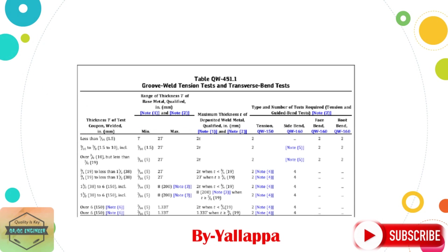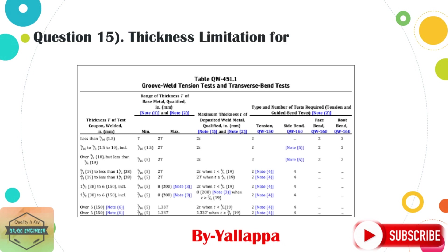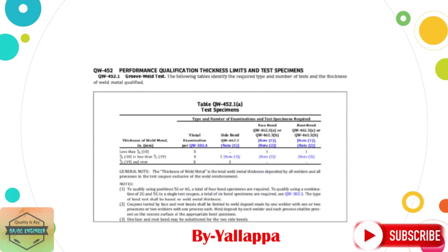Question 15: What is the thickness limitation for procedure qualification? Answer: If a welder deposits weld metal of thickness 13 millimeters or more with a minimum of three layers, then he or she qualifies for unlimited thickness. Please refer to ASME Section 9, QW-451.1.